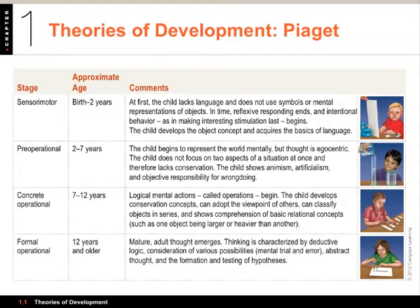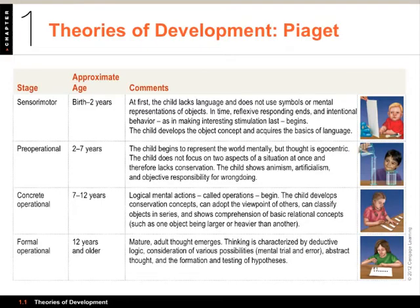These form the basis of the last stage Piaget looked at. He was trying to understand how people come to deal with abstract conceptual knowledge, and that happens in the formal operational period. From 12 years old, mature adult thought emerges: deductive logic, consideration of various possibilities, imagining things that didn't happen, counterfactual reasoning, abstract thought, and the formation and testing of hypotheses.